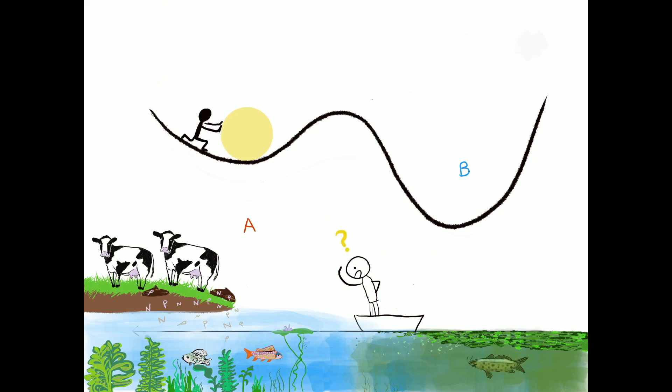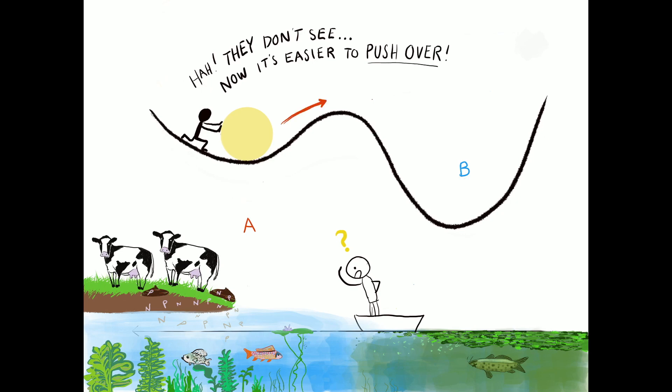The loss of resilience may therefore go completely unnoticed. However, note that it will be easier to push the system over a threshold.